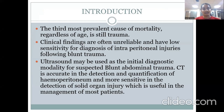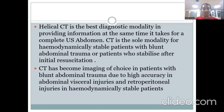Trauma is still the third most prevalent cause of mortality, regardless of age. Clinical findings are often unreliable and have low sensitivity for diagnosis of intraperitoneal injuries following blunt trauma. Ultrasound may be used as an initial diagnostic modality. CT is accurate in detection and quantification of hemoperitoneum and more sensitive in detection of solid organ injury. Helical CT is the best diagnostic modality, and CT has become the imaging of choice in hemodynamically stable patients with blunt abdominal trauma due to its high accuracy in abdominal visceral and retroperitoneal injuries.